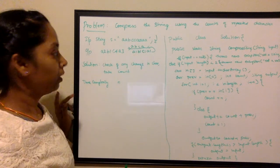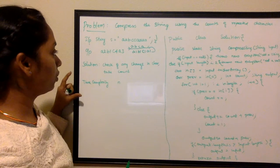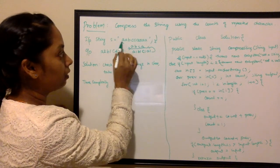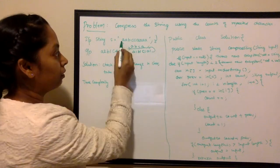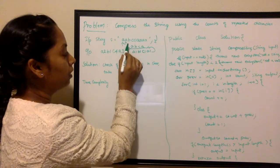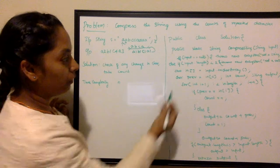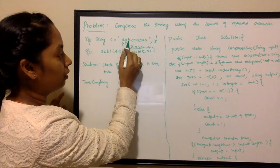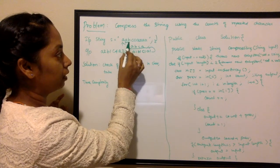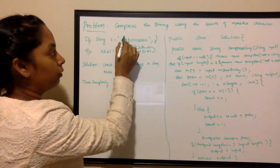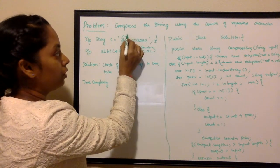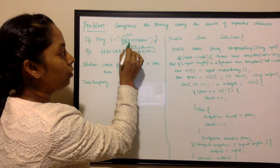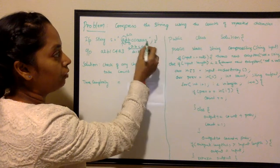The solution I'm thinking of: start from the first character, convert the string into a character array, take the first character and compare it with the second. If it is the same, I'm going to have a count variable and increase that count. If I see a different character, I would add whatever the count is — here the count is 2 and the value is 'a' — then reset the count to 0 and continue till the end of the character array.